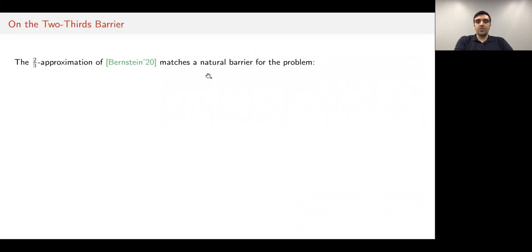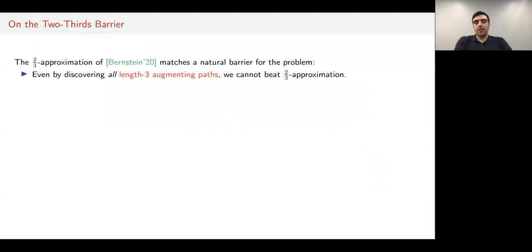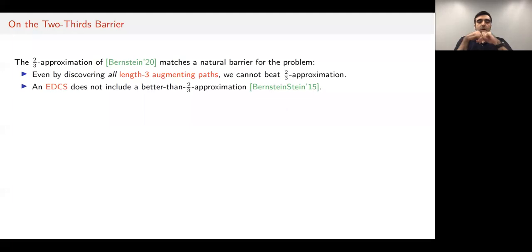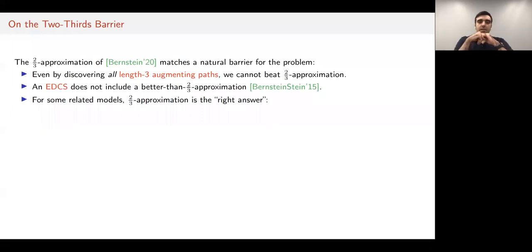I'd like to point out that the two-thirds approximation of Bernstein actually matches a natural barrier for the problem. The first line of work is based on discovering length-three augmenting paths. Even if you discover all length-three augmenting paths in your graph, you might still be at most two-thirds approximate. Two-thirds is a natural barrier for this line of work. Similarly, for the EDCS approach, there are examples showing that an EDCS does not include a better than two-thirds approximation.